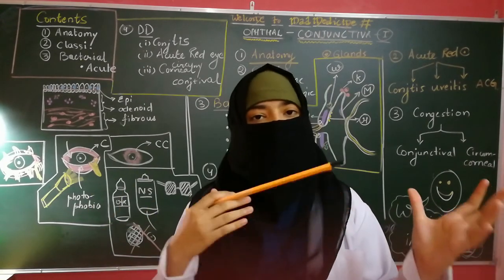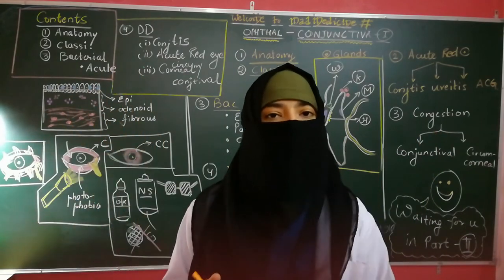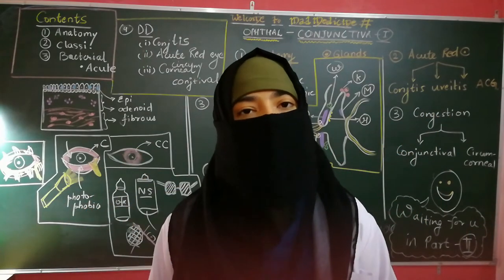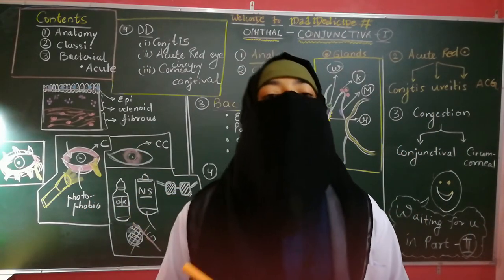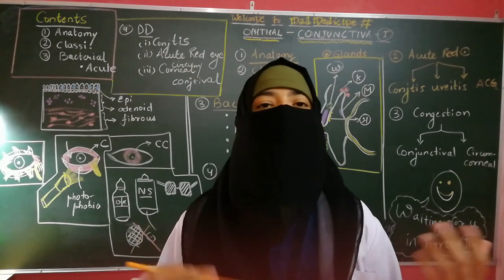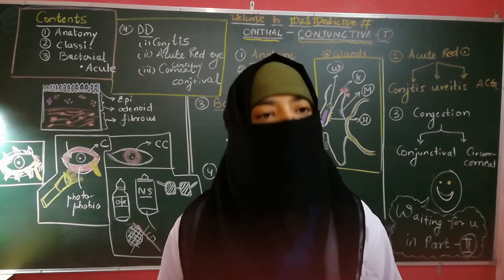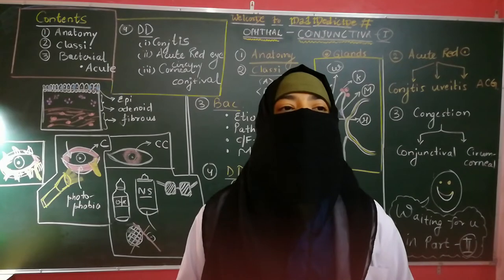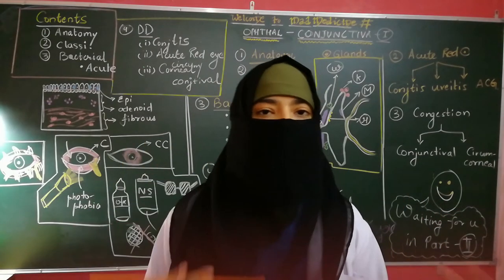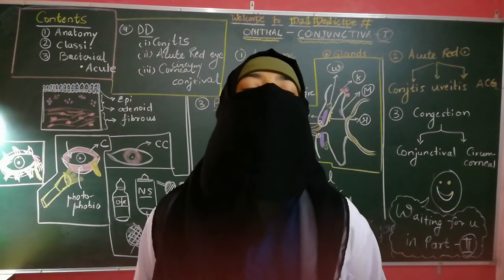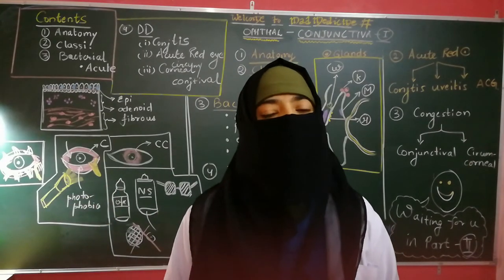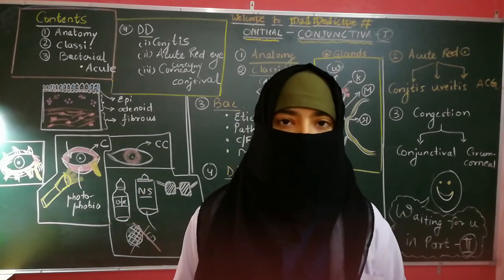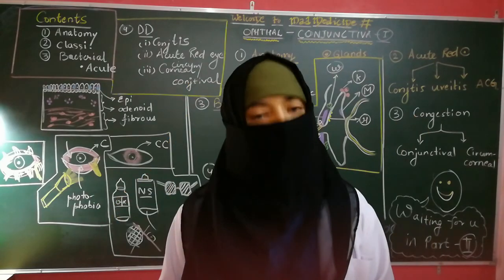Viral conjunctivitis can be caused by adenovirus, which has two forms: epidemic keratoconjunctivitis and pharyngoconjunctival fever. Other viral causes include enterovirus, herpes simplex, and molluscum contagiosum. Chlamydial conjunctivitis — the most important being trachoma — is next. Granulomatous causes include conditions such as Parinaud's oculoglandular syndrome. Lastly, ophthalmia neonatorum is an important condition seen in newborns.